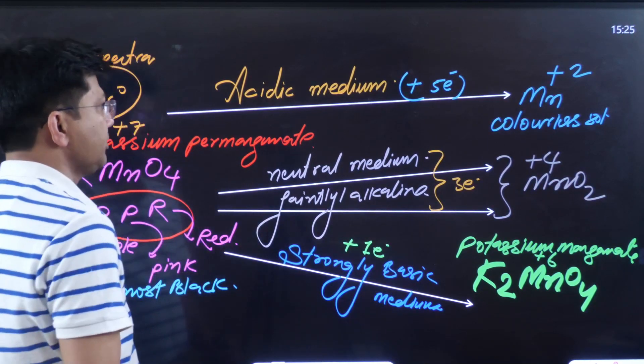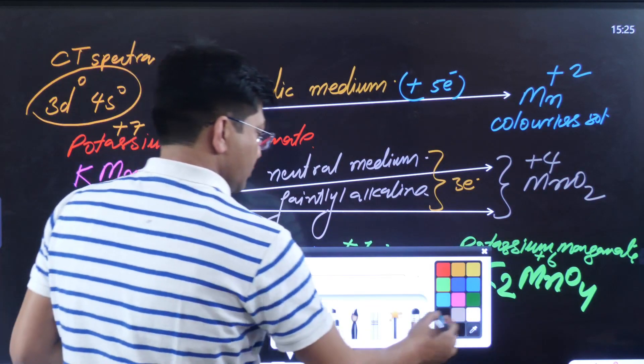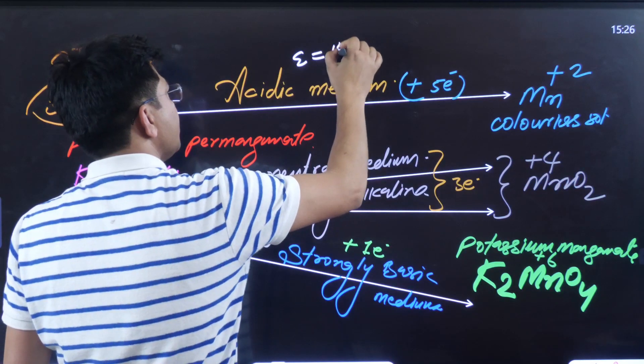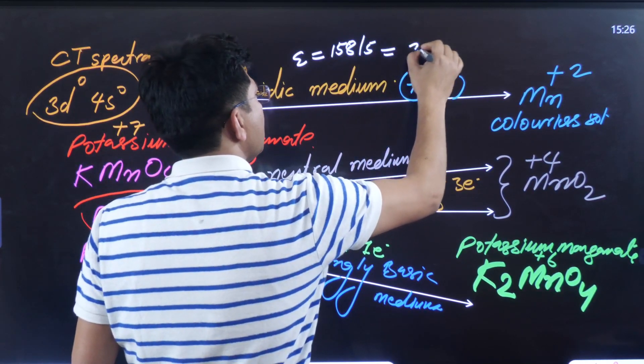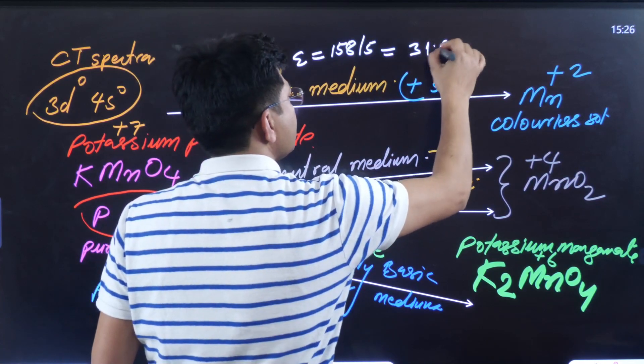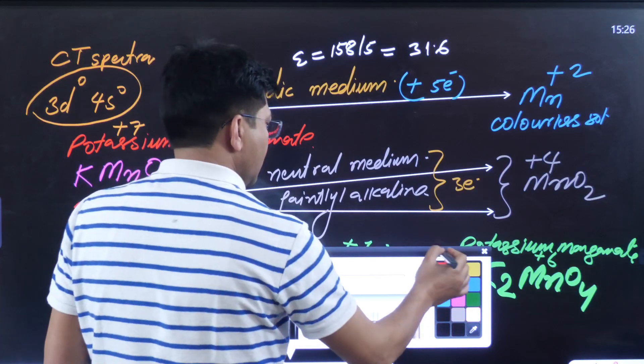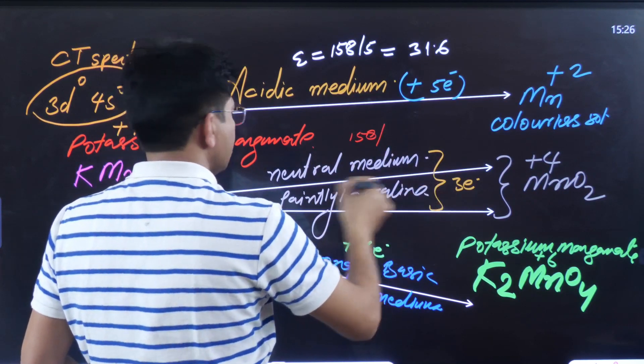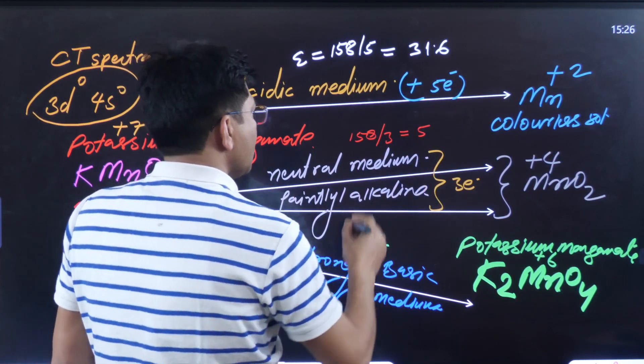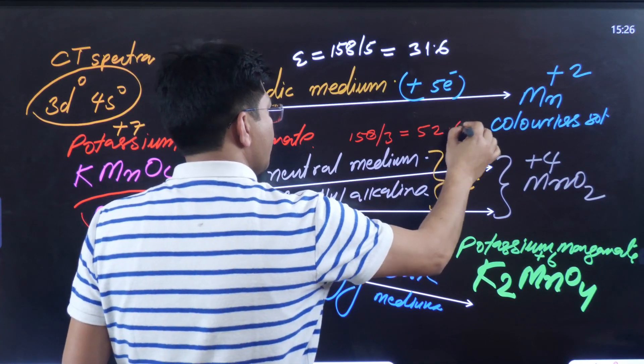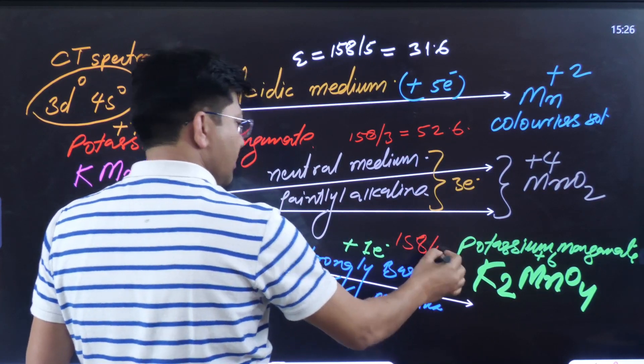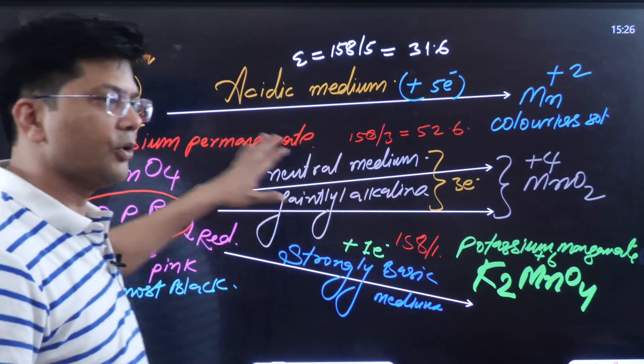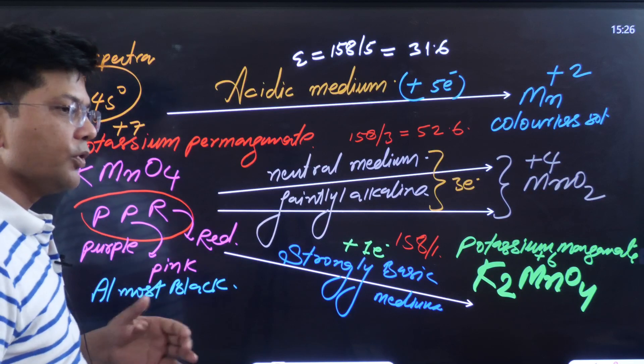It went from 7 to plus 6 oxidation state. That means it gained 1 electron. My dear students, if we talk about equivalent mass here, how much will the equivalent mass be? Its molecular mass is 158 for KMnO₄. So equivalent mass equals 158 divided by 5, which is 31.6. If I talk about neutral medium or faintly alkaline medium, then 158 divided by 3 electrons, which is 52.6. And here it gained only 1, so 158 divided by 1 equals 158. So this is the initial thing I would like to say. This is the starting thing about KMnO4.